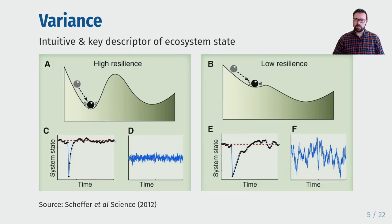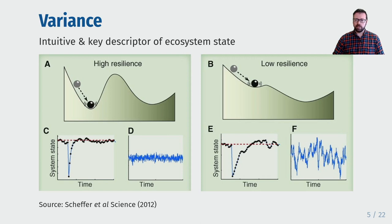The variance is an important measure of ecosystem state. Ecologists have linked variance with co-existence of populations and variance can be interpreted in terms of resilience theory. Here I'm showing two cartoons. On the left I'm showing the high resilience state where the ecosystem returns rapidly to the equilibrium following perturbation and hence has low variance as shown in plot d. On the right, in the low resilience state where the basin of attraction has become shallower, the ecosystem takes longer to return to equilibrium following perturbation and hence exhibits high variance.